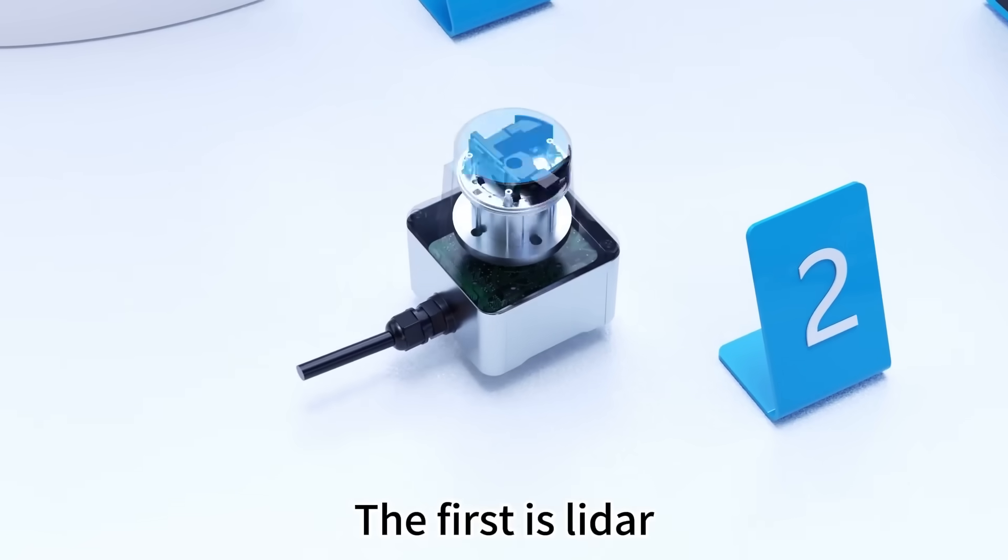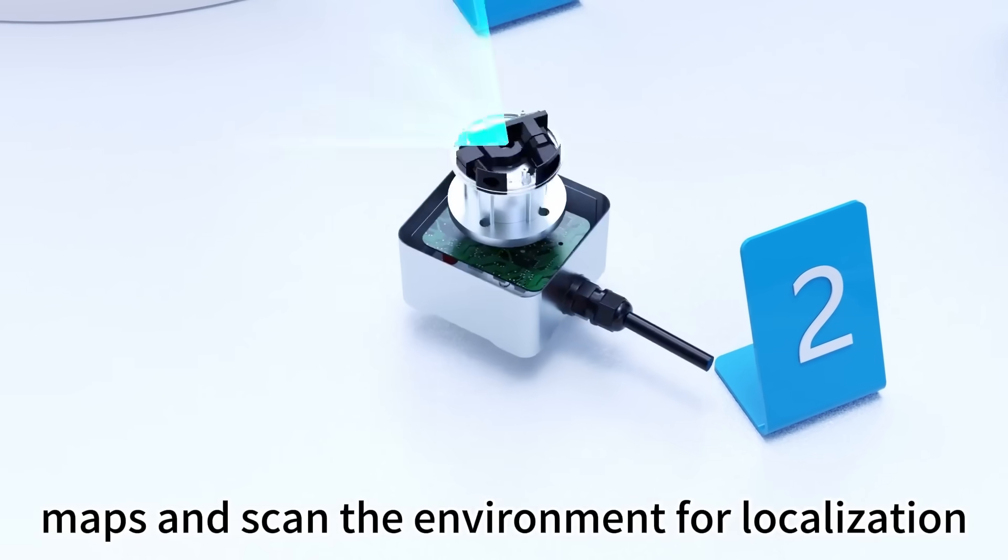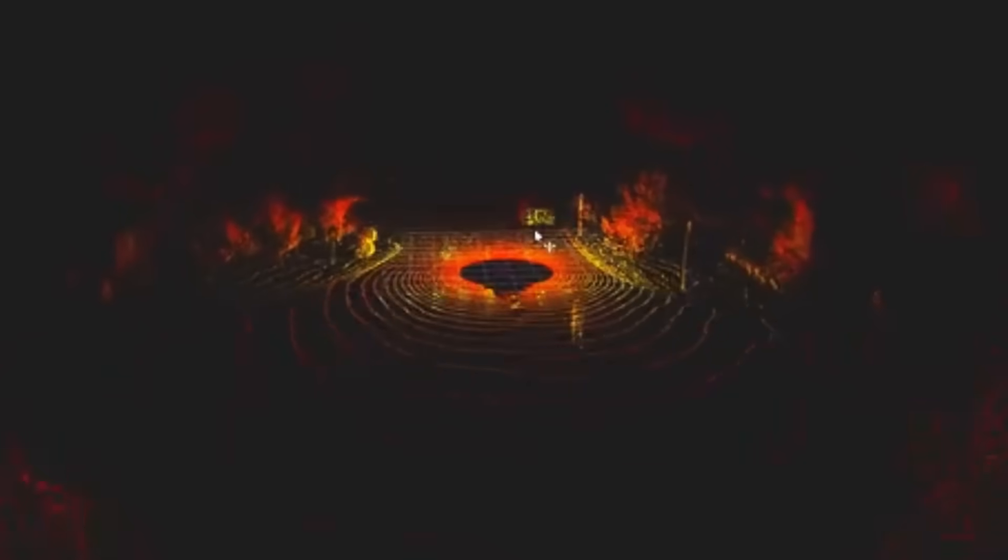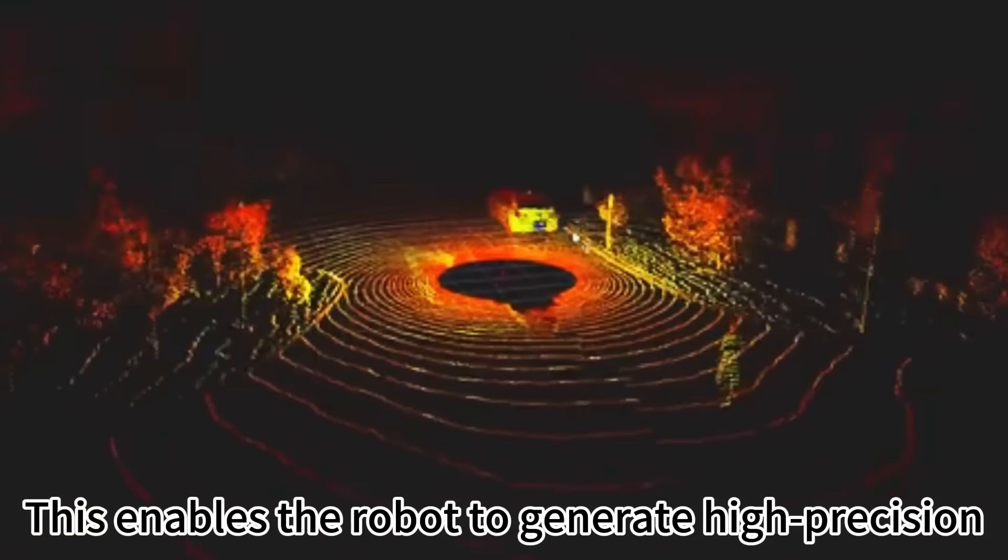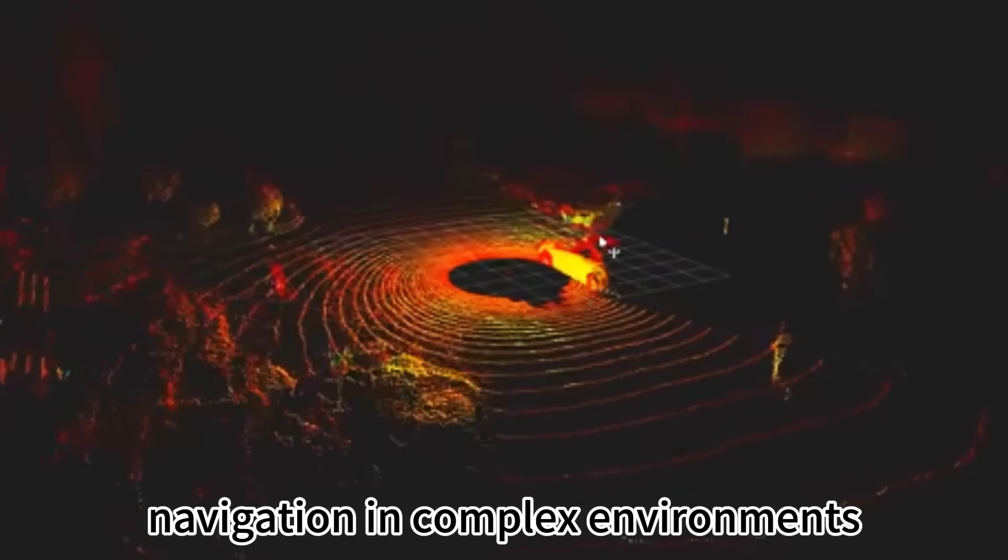The first is LiDAR, which is used to create maps and scan the environment for localization by measuring the reflection time between a laser beam and an object. This enables the robot to generate high-precision three-dimensional maps and achieve precise navigation in complex environments.